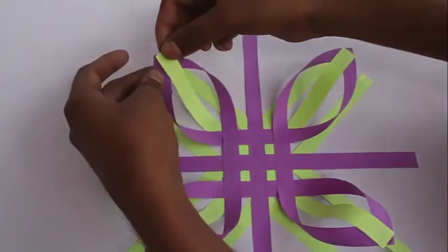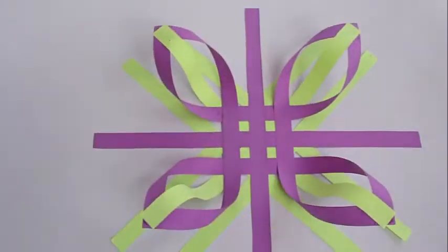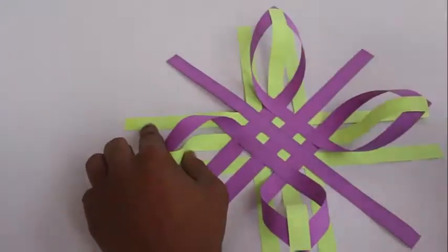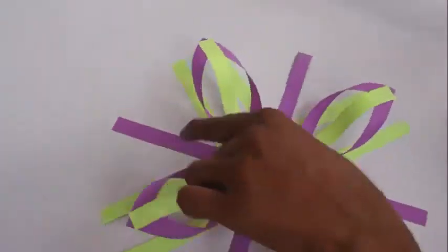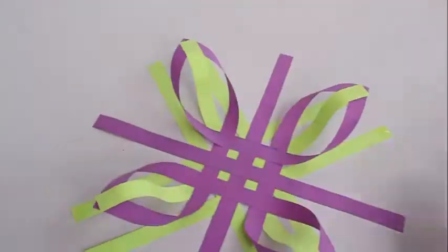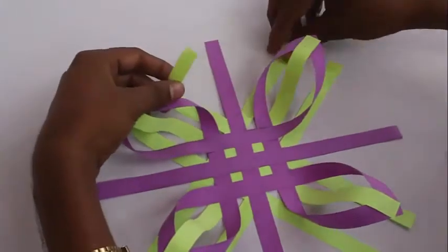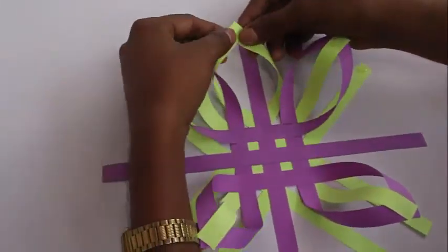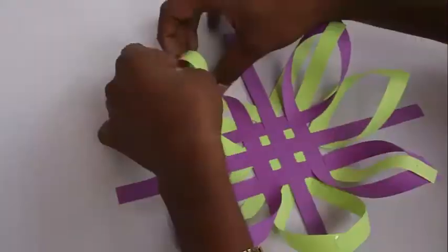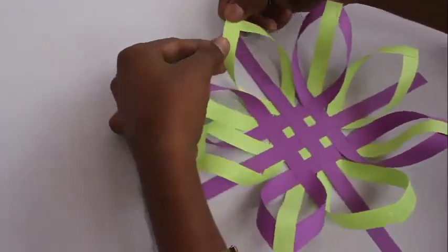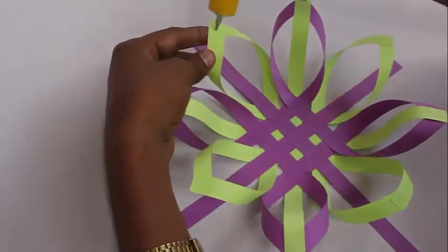We are going to repeat the same thing with the green strips. Now apply glue once again on the top right of four green strips and stick two green strips to make a petal. You have to make four such loops using green strips.